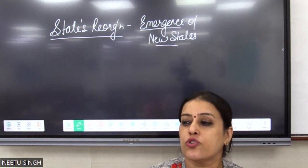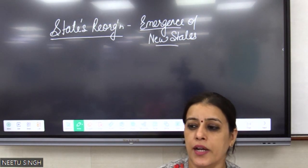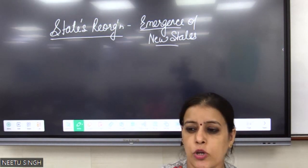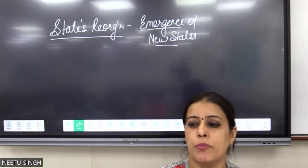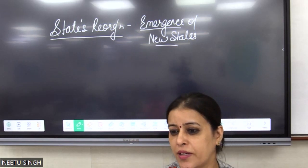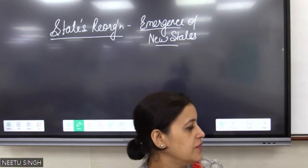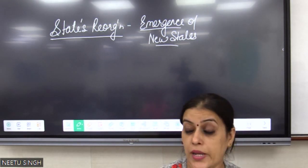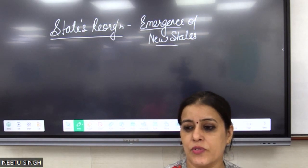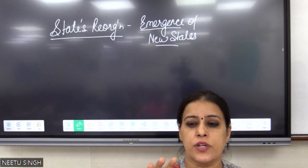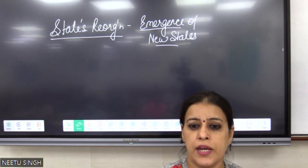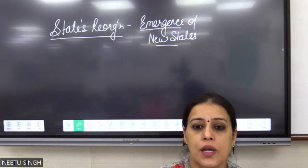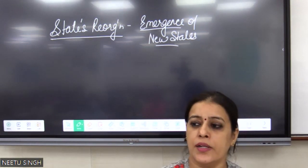The British by default gave the princely states a choice: go to India, go to Pakistan, or be independent. When we take the reference of this consolidation phase as a geographer, what should I give the examiner? Two things. If these are included, your answer is fully proofed in the geographical dimension. Number one: Junagadh, Hyderabad, and Jammu and Kashmir.